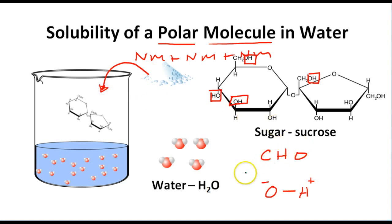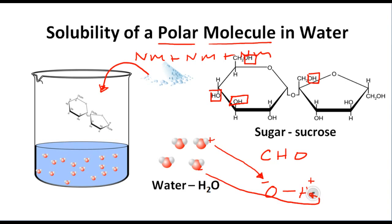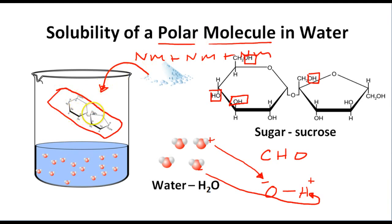When you put sugar in water, the positive end of the water molecule attacks the negative side of the sugar molecule, and the negative end of the water molecule attacks the positive side of the sugar molecule — since opposites attract. That's what causes polar molecules to dissolve in water. Unlike ionic compounds, the sugar molecule stays together and does not dissociate. Polar molecules are soluble in water but do not break apart.